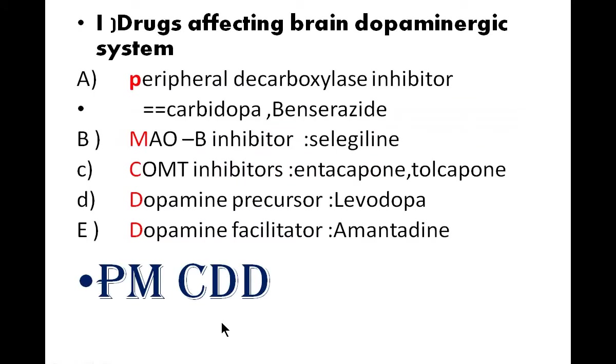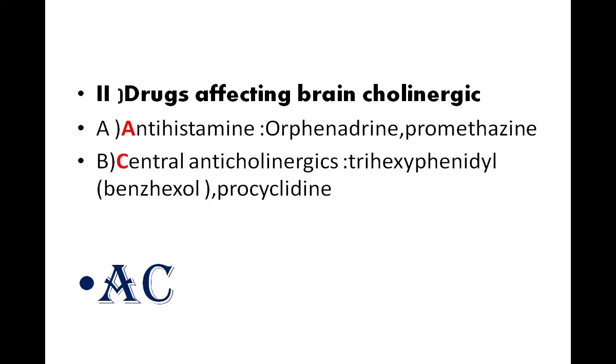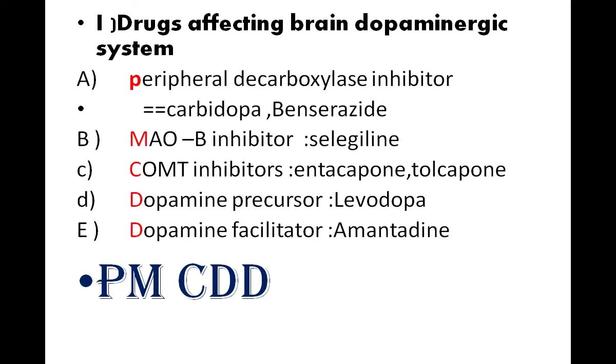Let's look at the classification of anti-Parkinsonian drugs. The classification is divided into two: first, drugs affecting the brain dopaminergic system, and second, drugs affecting the brain cholinergic system.